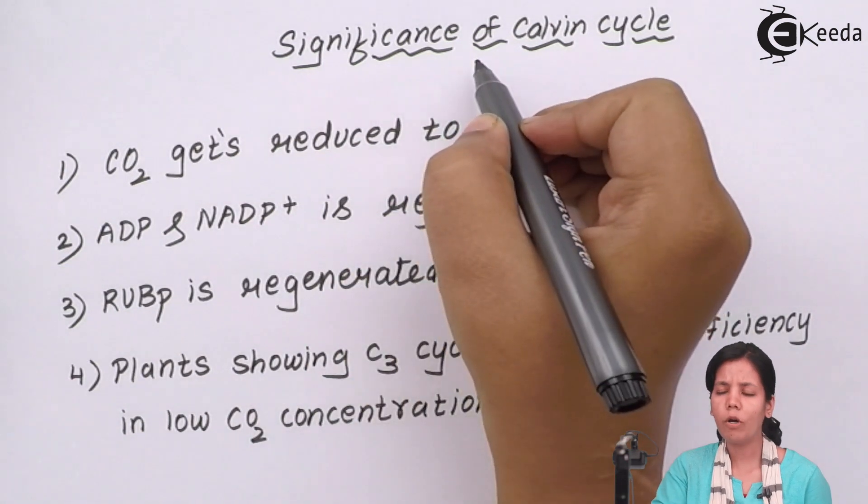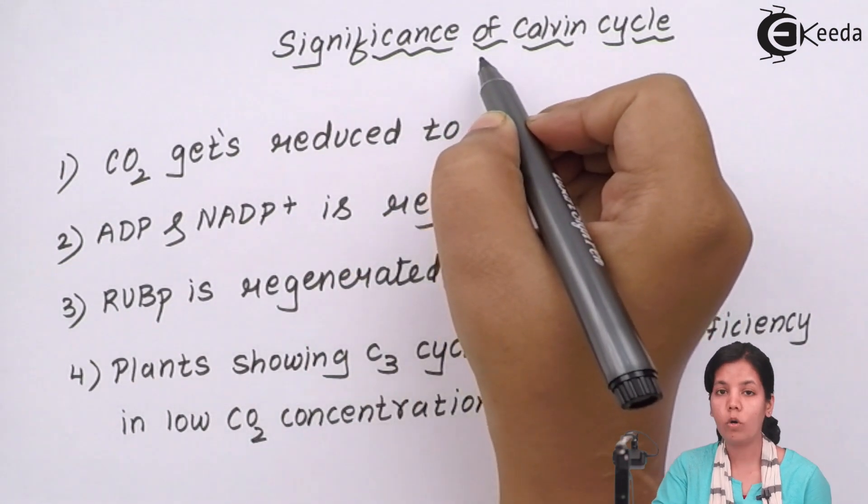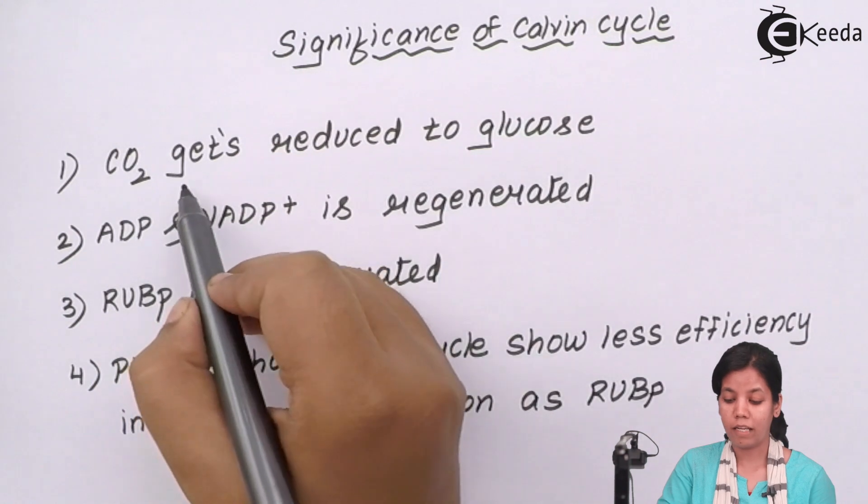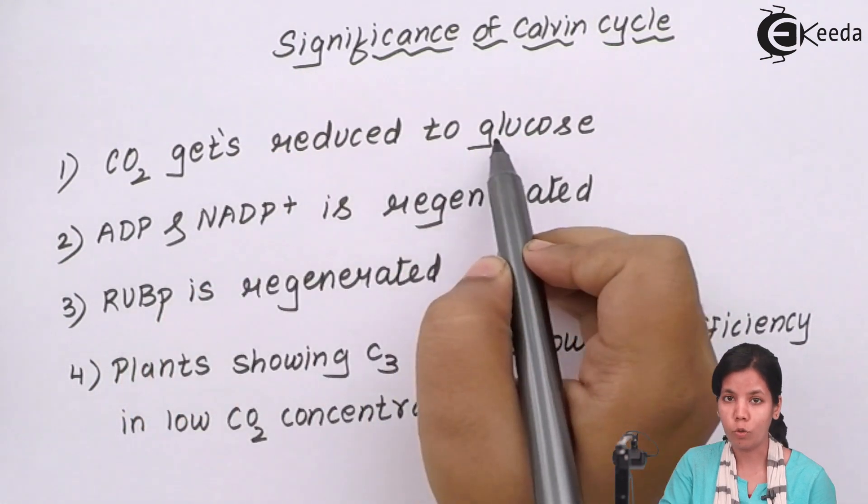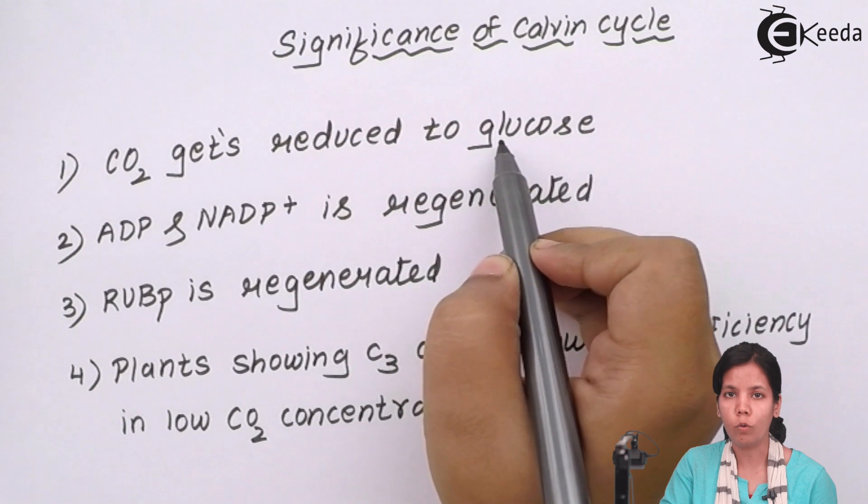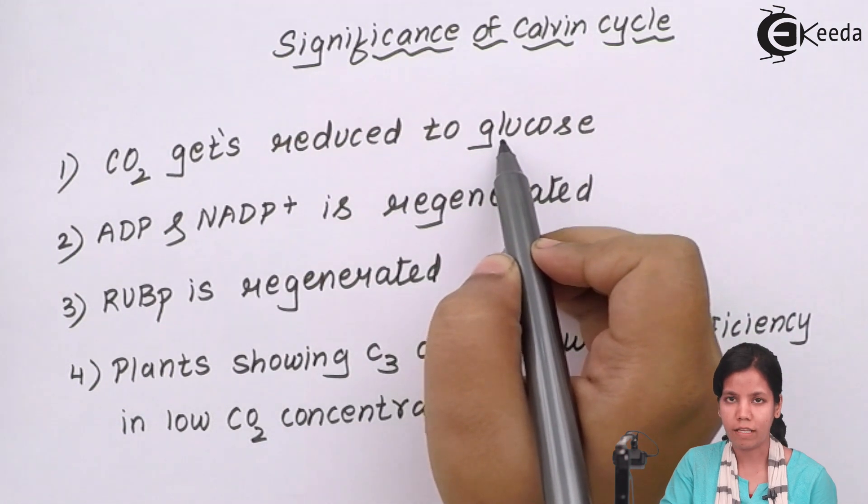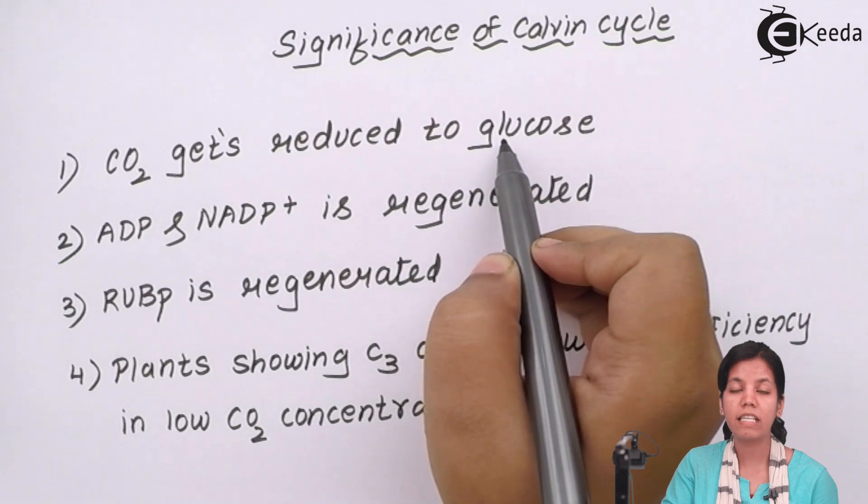The significance or importance of Calvin cycle or C3 cycle: carbon dioxide gets reduced to glucose. The main food or the plant food glucose is formed during Calvin cycle. To form one molecule of glucose, Calvin cycle runs six times.